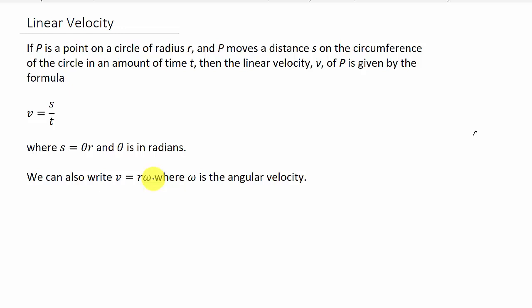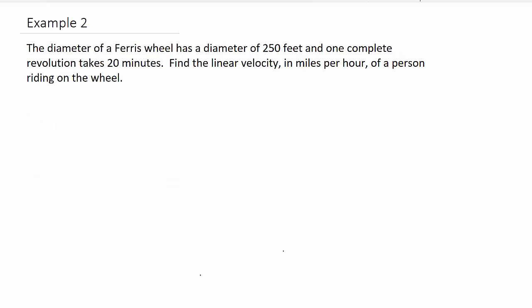Alright, so let's take a look at example two on linear velocity. It says the diameter of a ferris wheel has a diameter of 250 feet, and one complete revolution takes 20 minutes. Find the linear velocity in miles per hour of a person riding on the wheel.